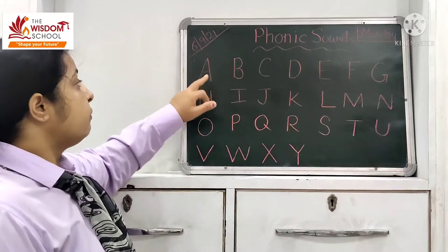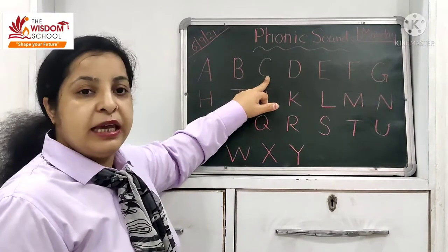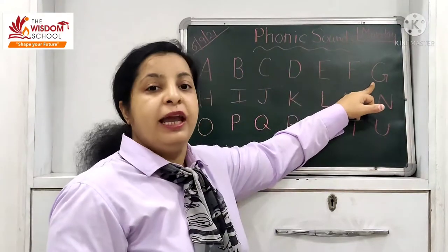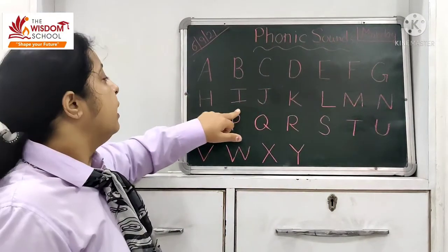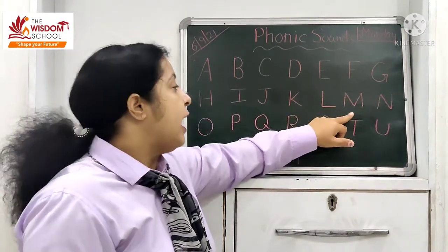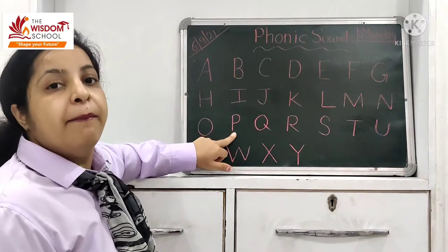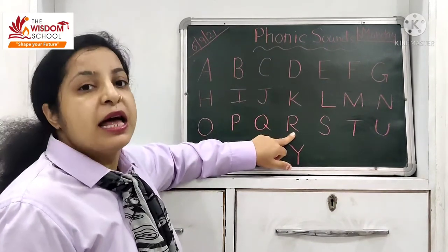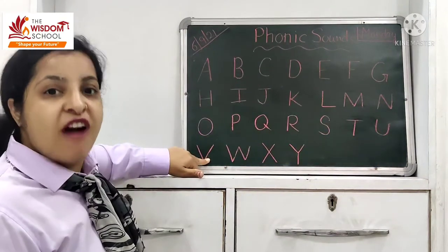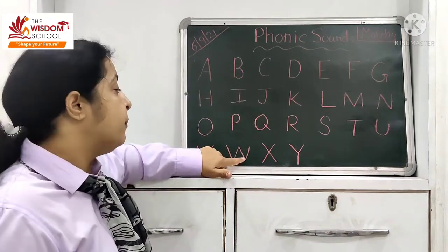Kids, look at the blackboard. A - sound is A. B - B. C - Kh. D - D. E. F - F. G - G. H - H. I - E. J - J. K - Kh. L - L. M - M. N - N. O - O. P - P. Q - Q. R - R. S - S. T - T. U - A. V - B. W - W. These are our letters and their phonic sounds which we have already done. Now we have quickly done the revision.